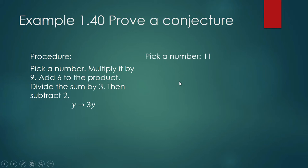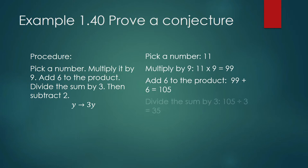Let's try it. Let's say for example our number is 11. Let us multiply it by 9, it's 99. Let us add 6 to the product, 99 plus 6 is 105. Let us divide the sum by 3, 105 divided by 3 is 35, and then let us subtract 2, it's 33. So coming from 11, applying the procedure produces a number which is 33, and 33 is 3 times 11.